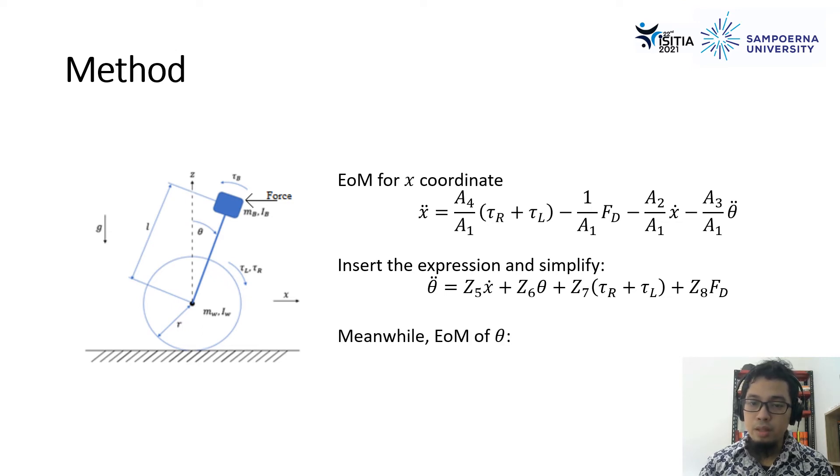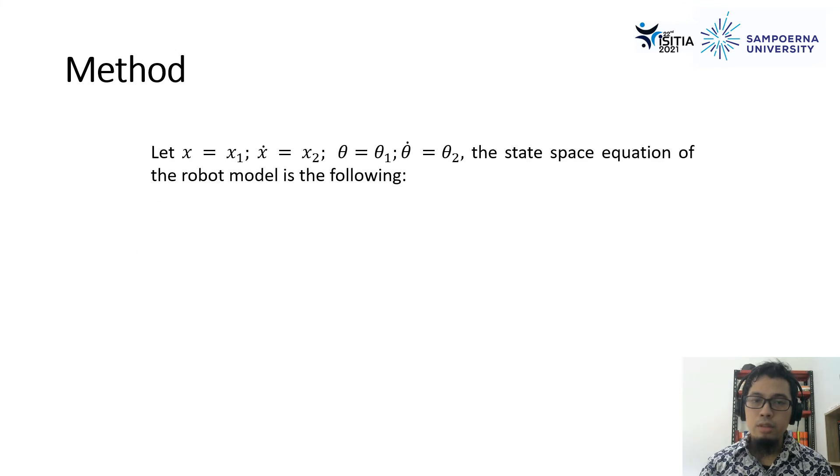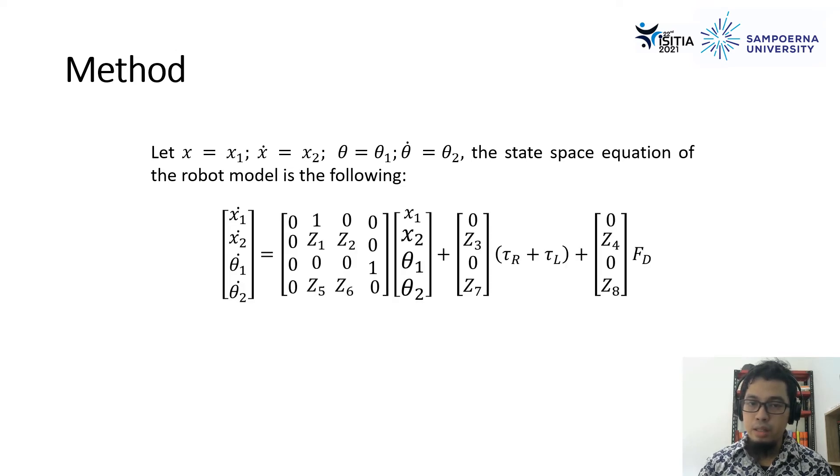Meanwhile, for the equation of motion of theta is defined by these equations. Now, let x is equal to x1, x-dot is equal to x2, theta is equal to theta1, theta-dot is equal to theta2. Then, the state-space equations of the robot model is described by these equations.